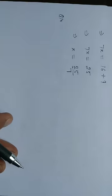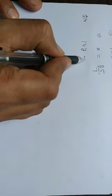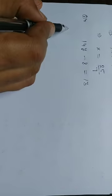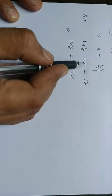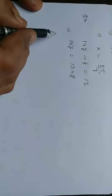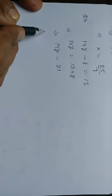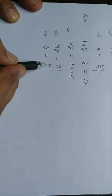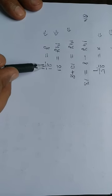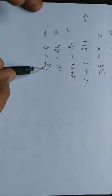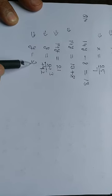Question number 10: 14y minus 8 is equal to 13. Transposing minus 8 to the right hand side, it becomes plus 8. So 14y is equal to 13 plus 8, which is 21. Therefore y is equal to 21 upon 14. Simplifying, 7 goes into both: y is equal to 3 upon 2. This is the answer.